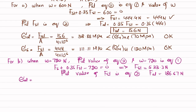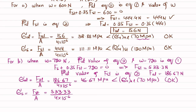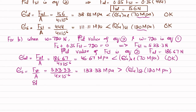We check stresses for part B. Stress in aluminum = 186.67 / (4×10⁻⁶) = 46.67 MPa, which is less than the yield strength of 70 MPa — aluminum is okay. Stress in steel = 533.3 / (4×10⁻⁶) = 133.3 MPa, which is greater than the yield strength of steel (120 MPa). This means the steel wire yields.